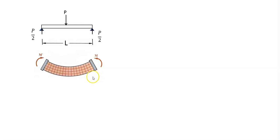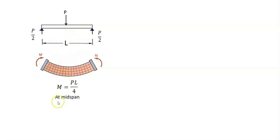The beam starts taking the shape of a circular arc, and we can calculate the moment along this beam. At the middle, we would have P over 2 times L over 2, because moment is load times distance. So at mid-span, we would have PL over 4 as the moment, which is the maximum moment.